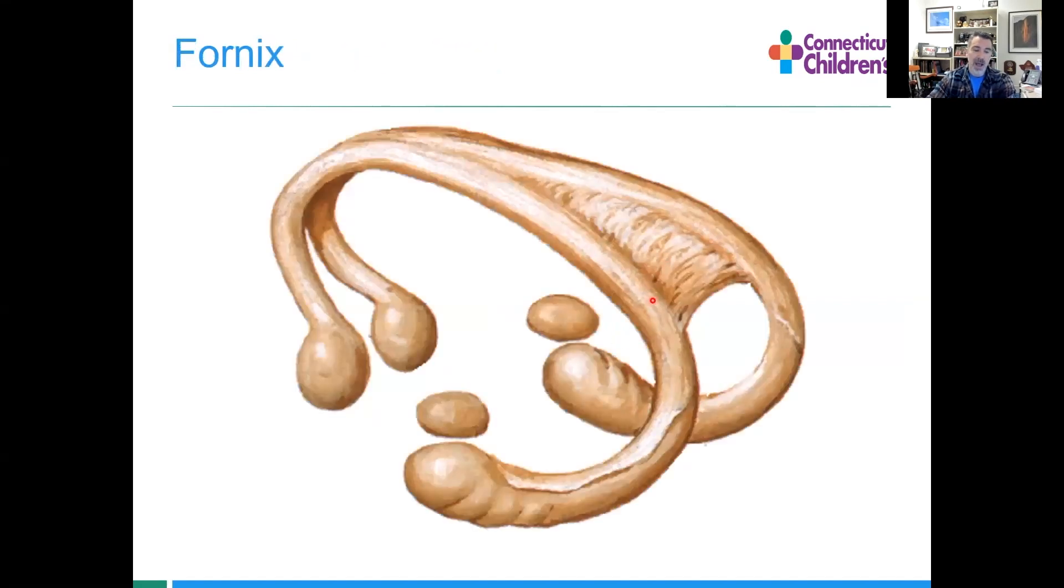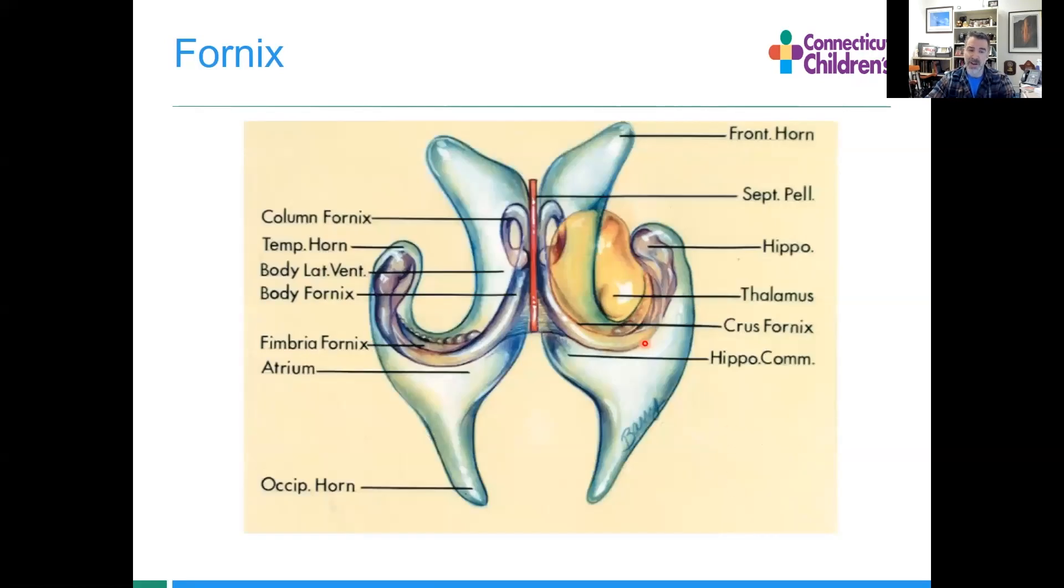The fornix is a component of the limbic system, the major output tract for the hippocampus. You have to understand the anatomy of the columns of the fornix, the body, hippocampus, commissures, and the crura, and where they sit relative to the ventricle. Looking from above, the frontal horns are here, the fornices sit on the medial floor of the lateral ventricles and form the roof of the foramen of Monroe.